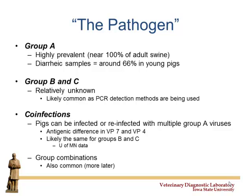Just because you make antibodies or are infected with rotavirus A doesn't mean you can't be infected with B or C at the same time, because they're technically different viruses antigenically. There are lots of combinations that can be occurring in a neonatal or post-wean pig at one particular time — it's likely multiple viruses, not just one.